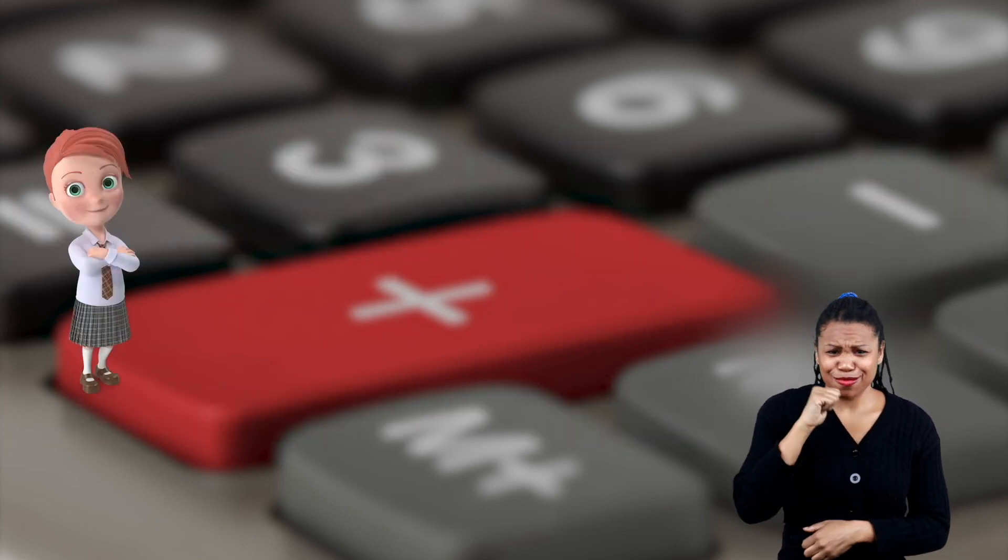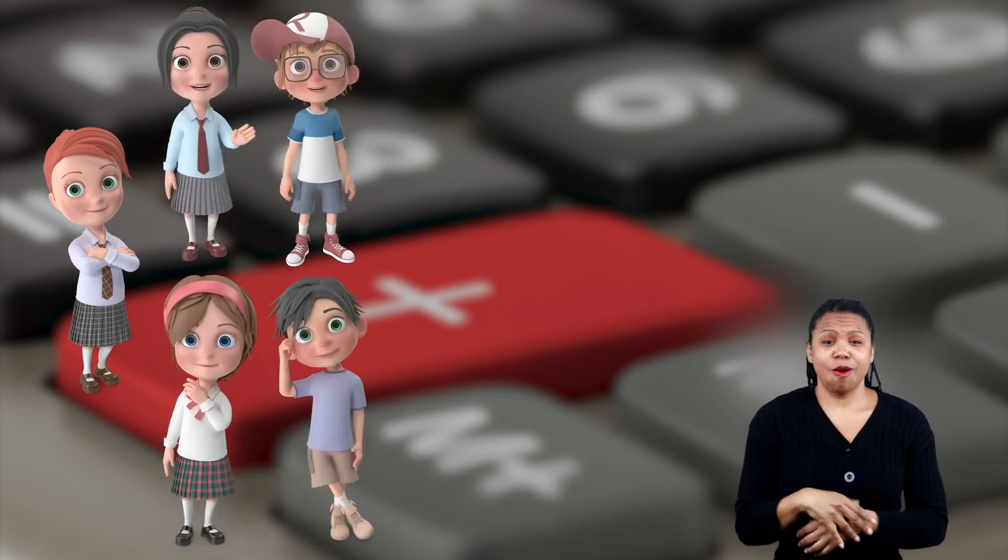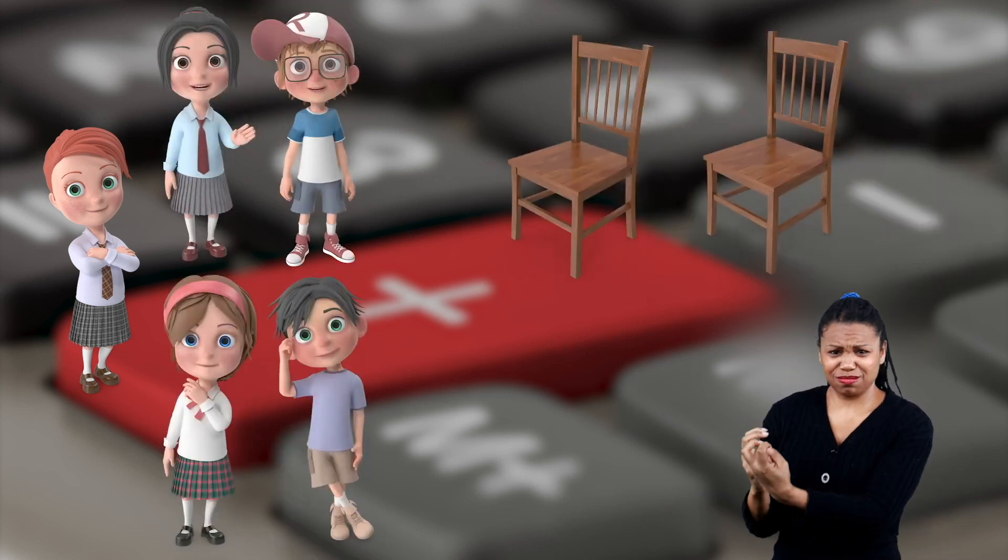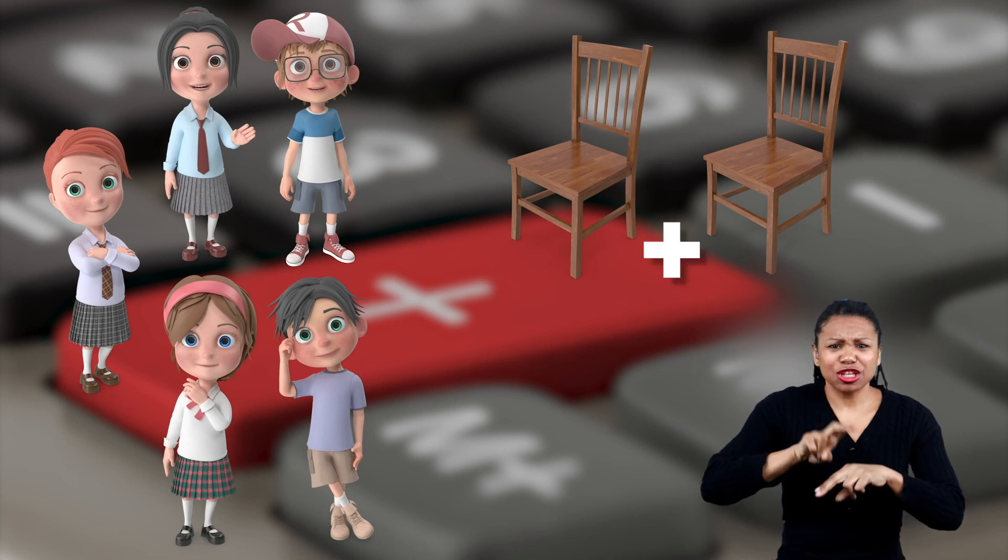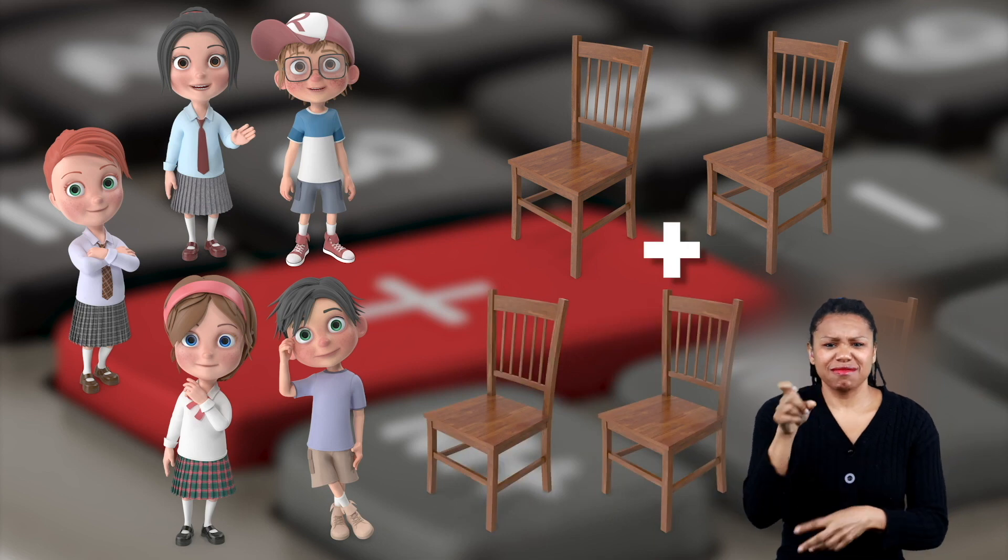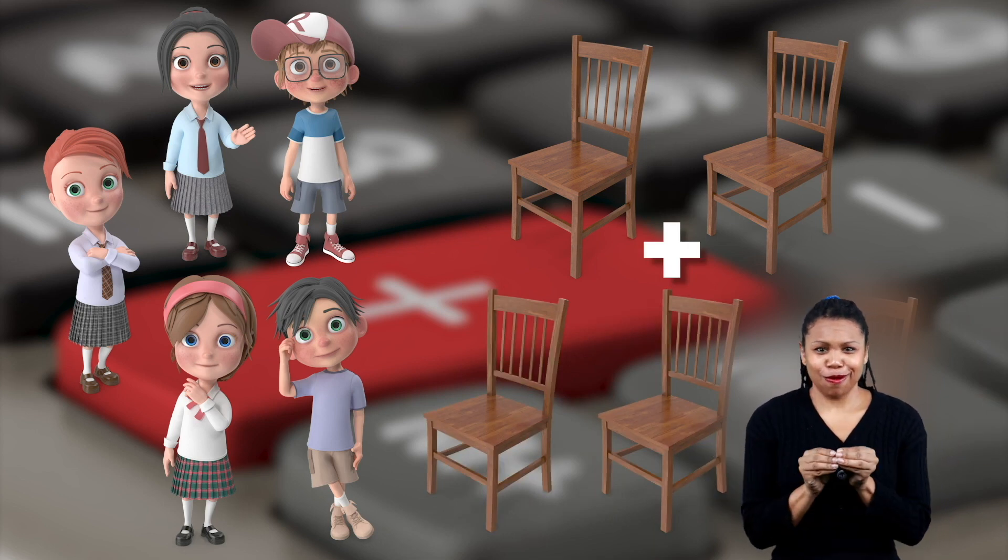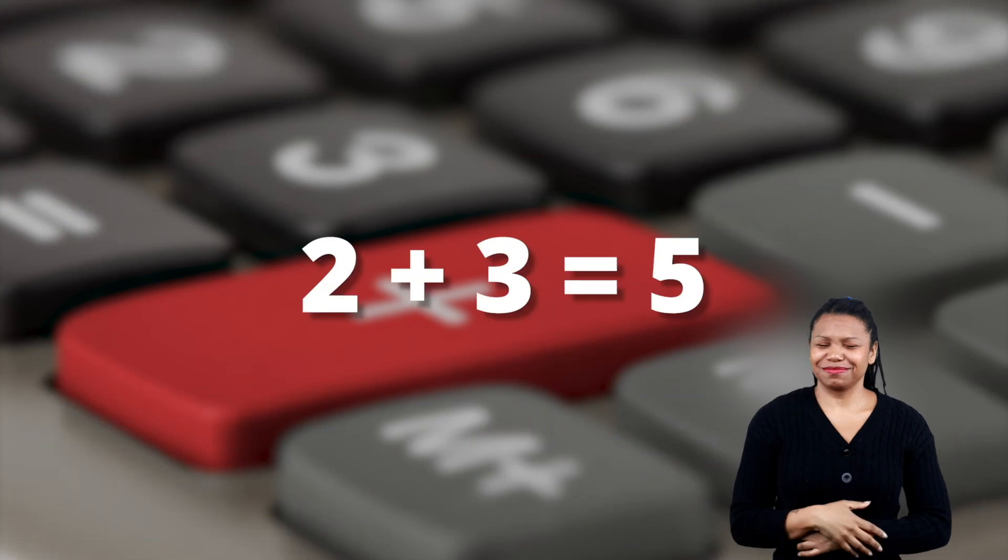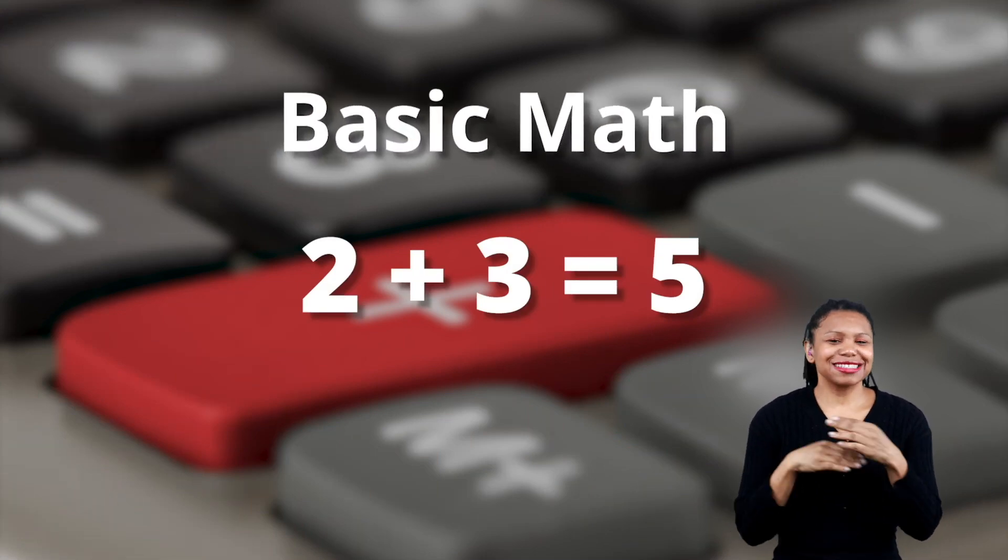Throughout your day, you add things together. Let's say you have four friends over for dinner, but only have two chairs at the table. You'll need to add more chairs so all five of you can sit. So to get five chairs, you'll need to add three to the two you already have. Two plus three equals five. This is known as basic math.